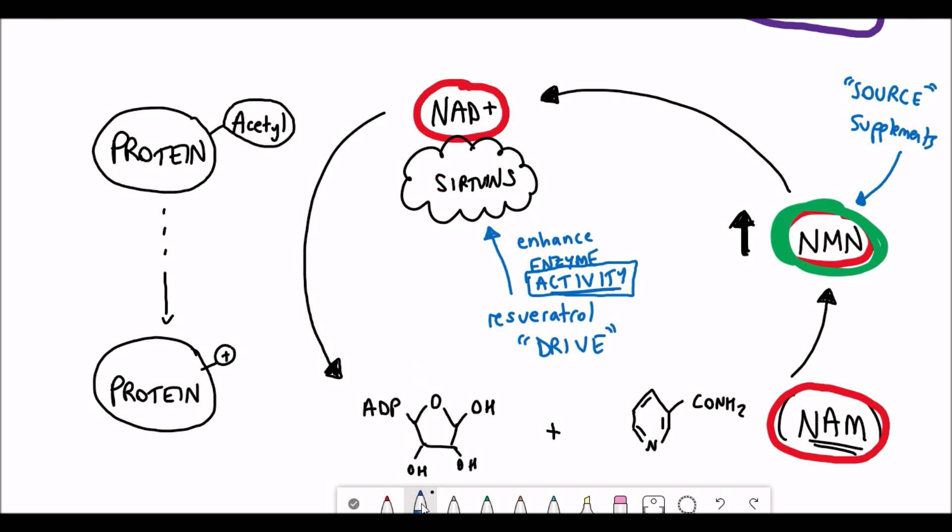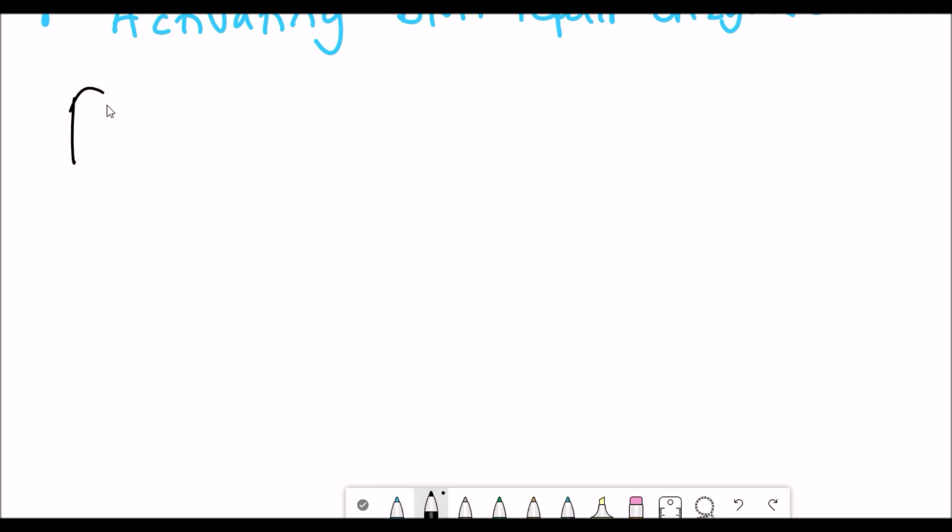This is because resveratrol targets SIRTUINs and increases their activity, whereas NMN increases the levels of NAD, which is kind of like the source, whereas SIRTUINs have that enzymatic activity. So resveratrol could be seen as the driver and NMN as the source. But this is merely me speculating as to what might be the reason. There is no definitive evidence out there that does prove this to be the case, at least that I'm aware of.